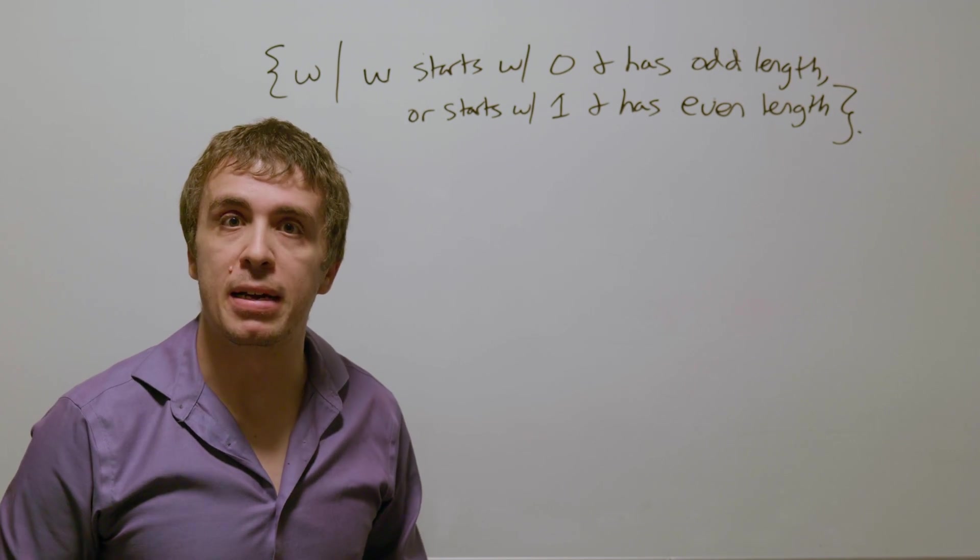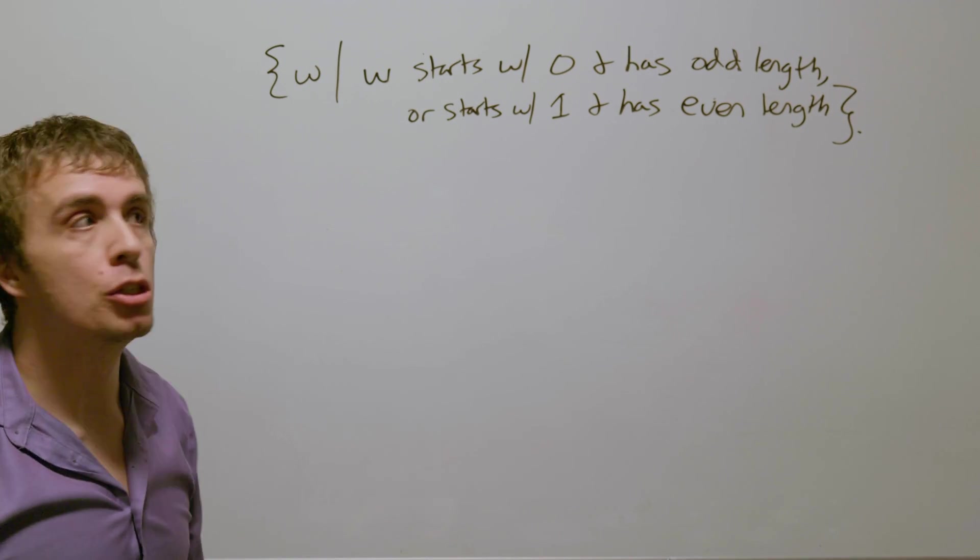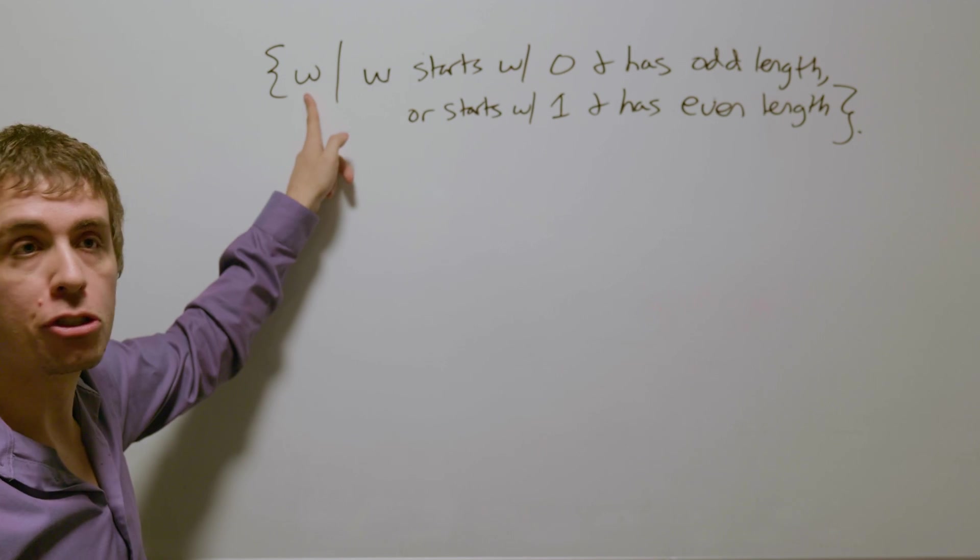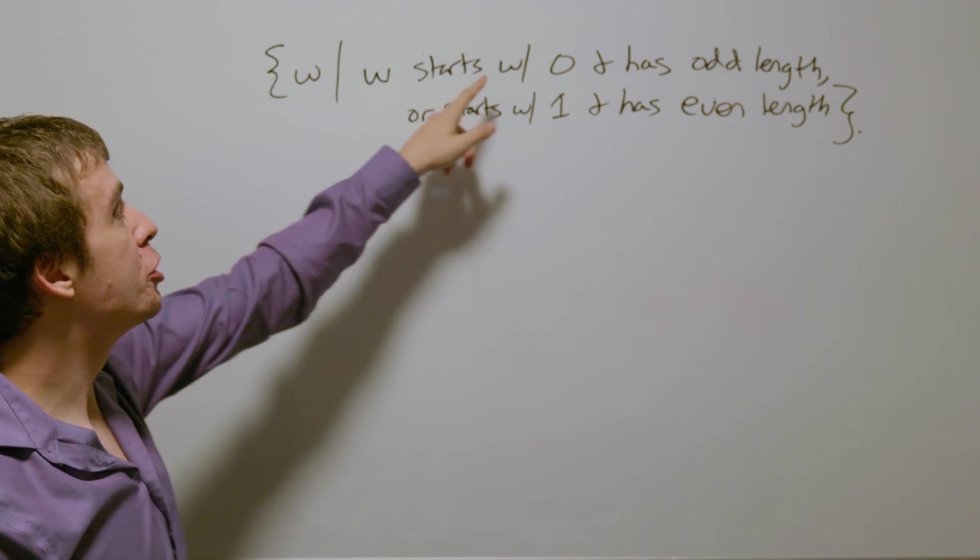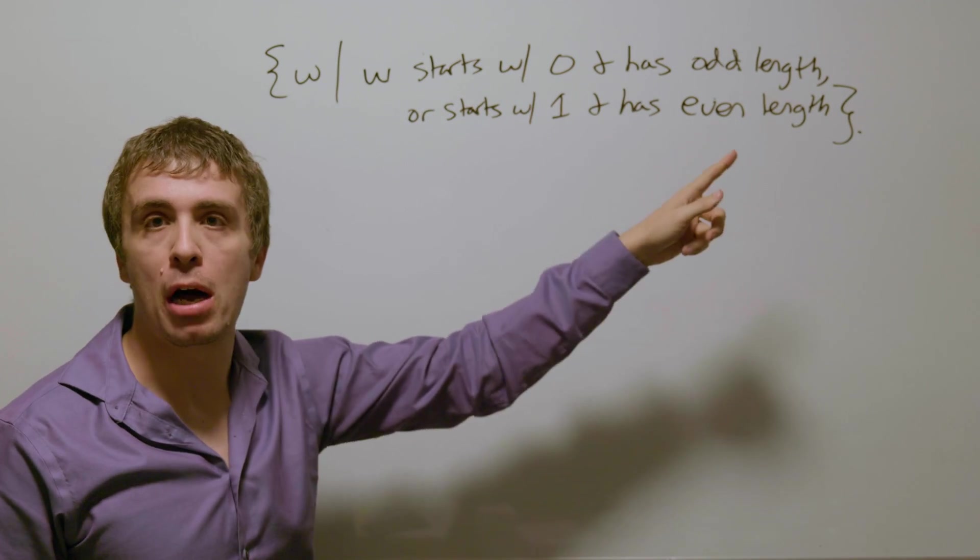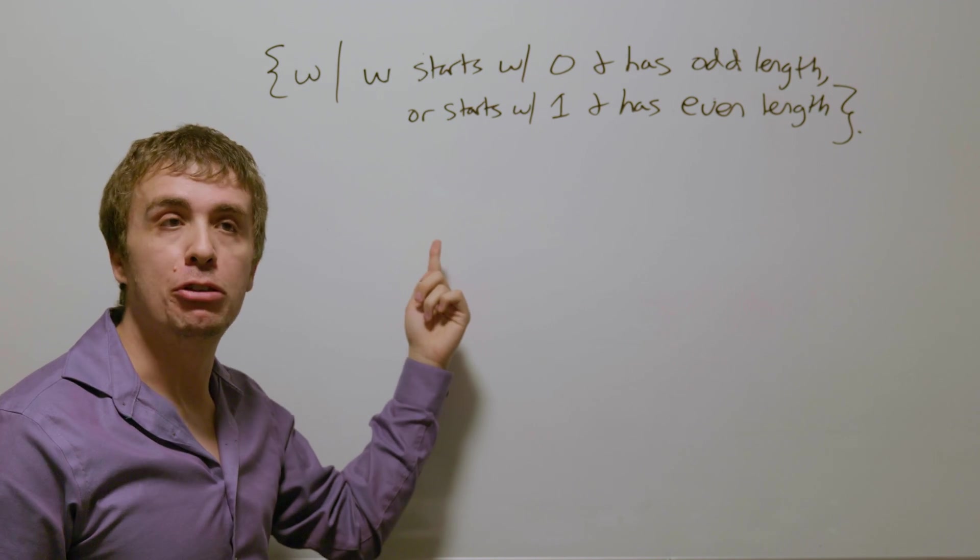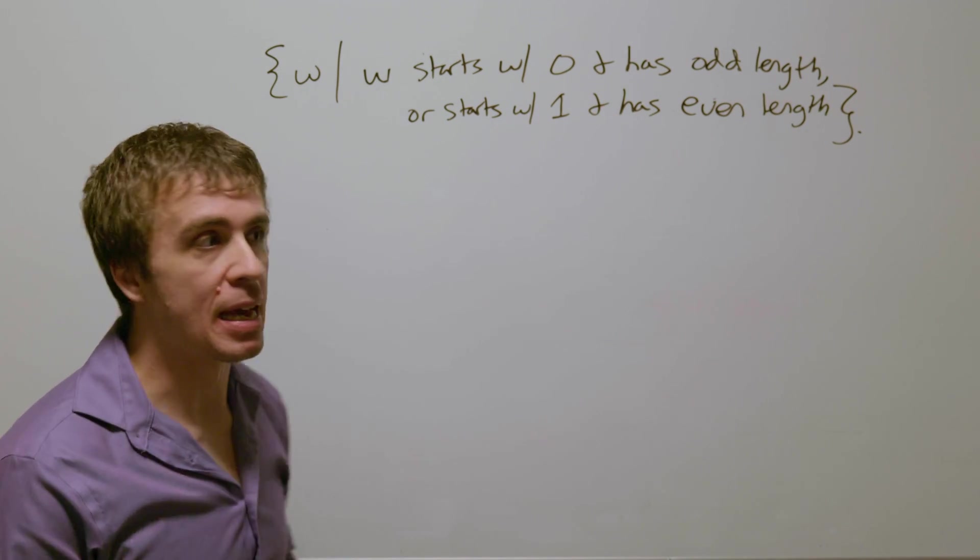Okay, let's make a deterministic finite automaton for this language, which is the set of all binary strings w, where w starts with a 0 and has odd length, or w starts with a 1 and has even length.